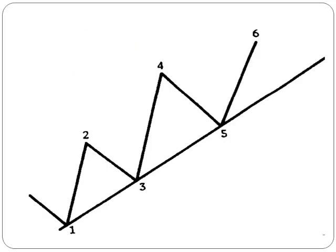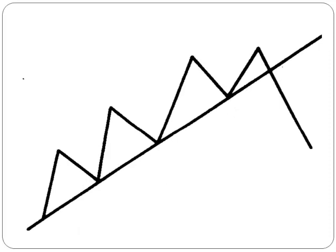Here is an example of an uptrend line. A tentative trend line is first drawn under two successively higher lows, points 1 and 3, but needs a third test, point 0.5, to confirm the validity of the trend line. A break below the trend line indicates a trend reversal. The uptrend line, which is the support line, will become a resistance line once the trend is broken.